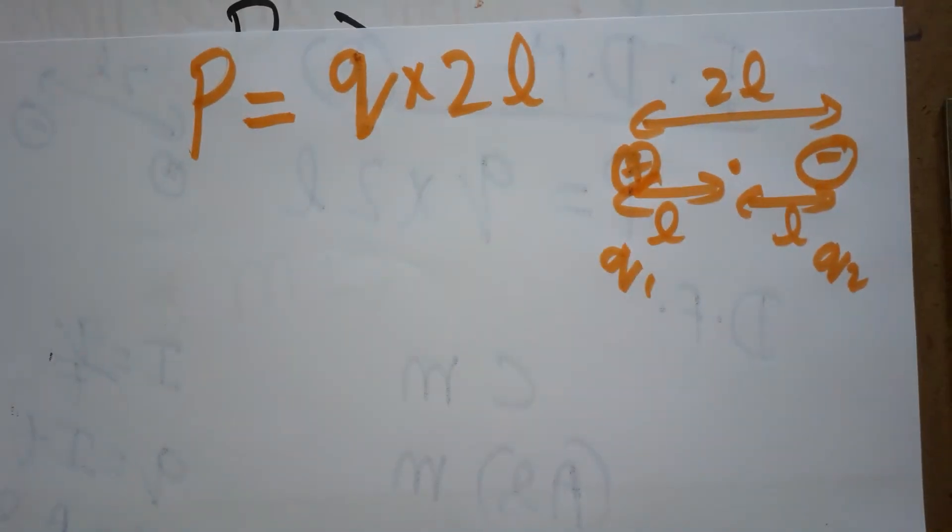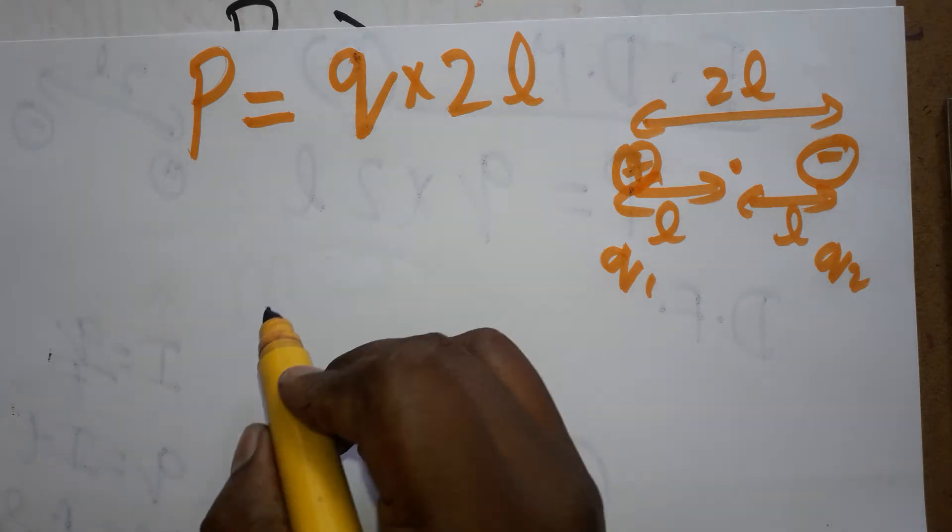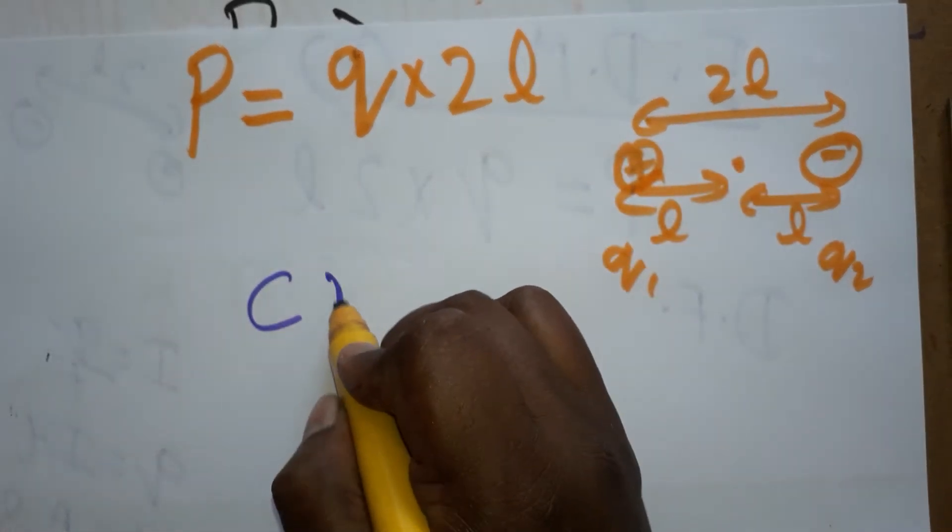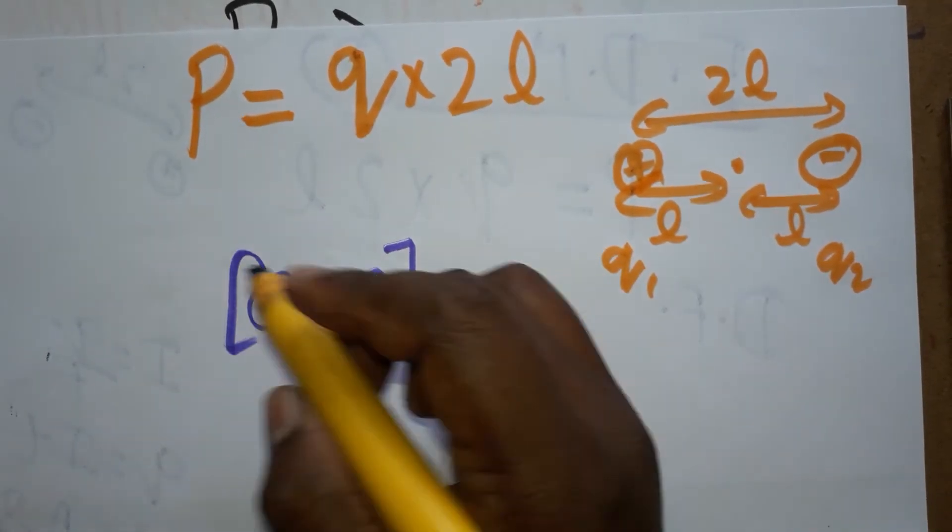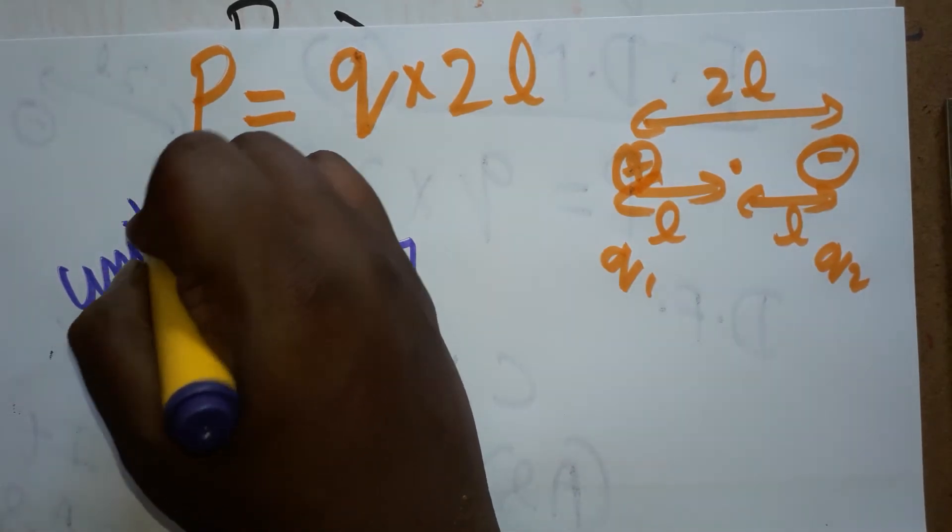The SI unit and dimensional formula for electric dipole moment: charge we can take as coulombs, length as meter. So coulomb-meter is the unit of electric dipole moment.